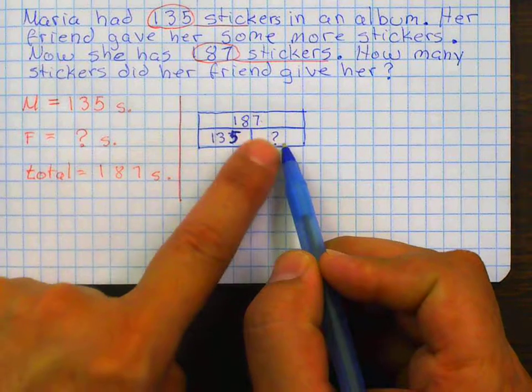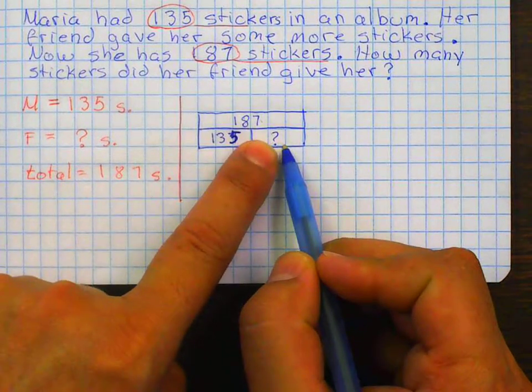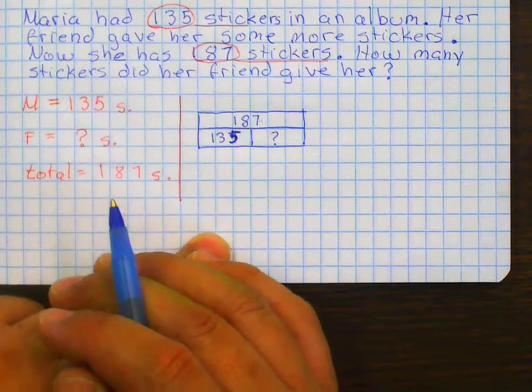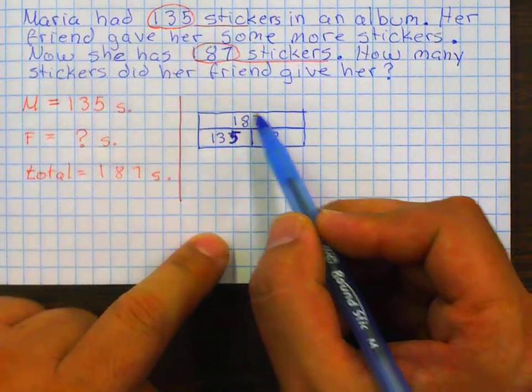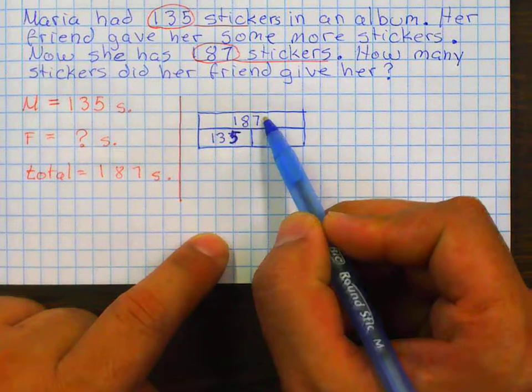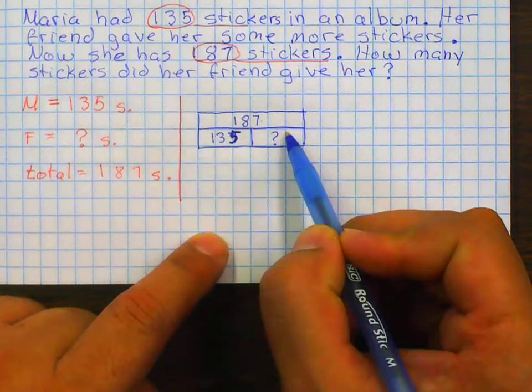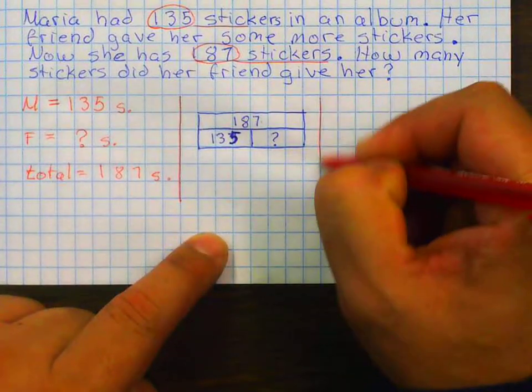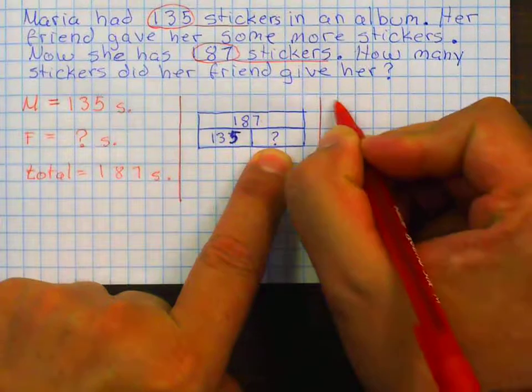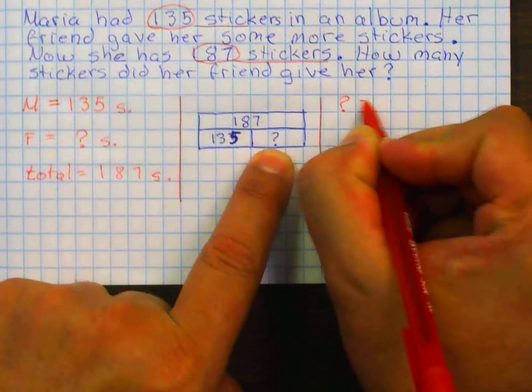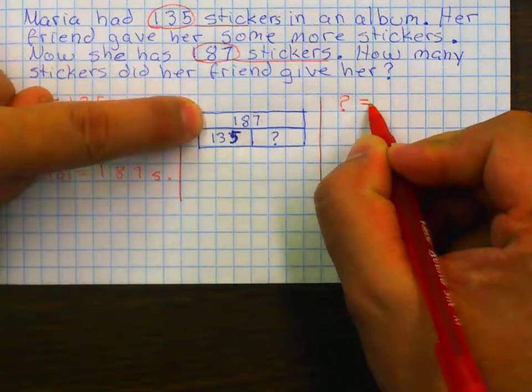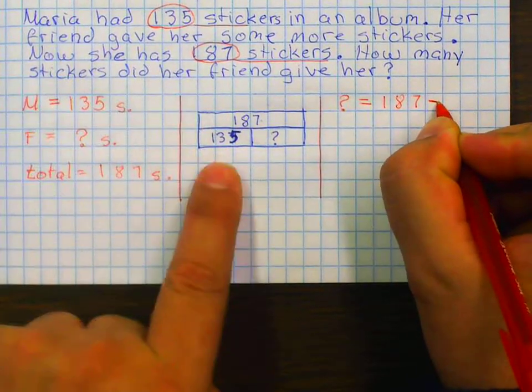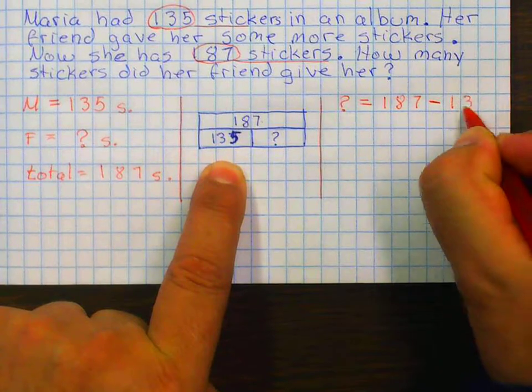So, to figure out how to find that number, what would I need to do with these two? I need to subtract. Because 187, when I take what she had at the beginning, it's going to give me what her friend gave her. So, to figure out how many stickers her friend gave her, I would need to subtract the total, 187, minus what I had at the beginning, 135.